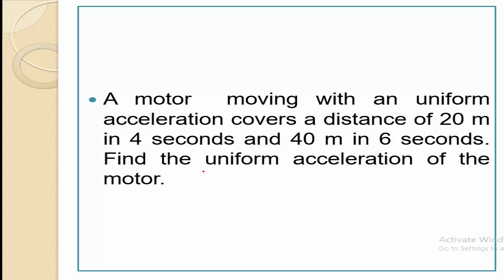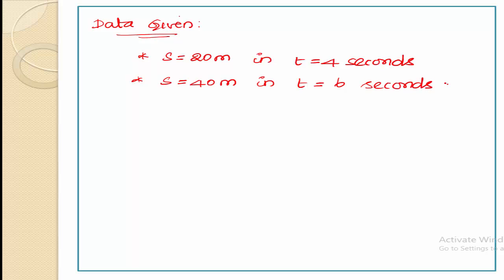The data given in this problem are: the considered motor is crossing distance 20 meters in the time period of 4 seconds, and the same motor can travel the distance of 40 meters in the time interval of 6 seconds. For this case, we are asked to find out the uniform acceleration a.